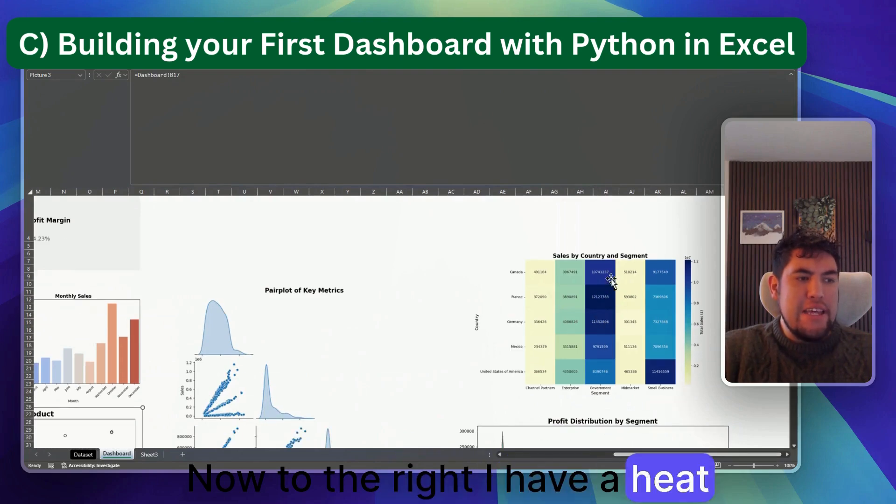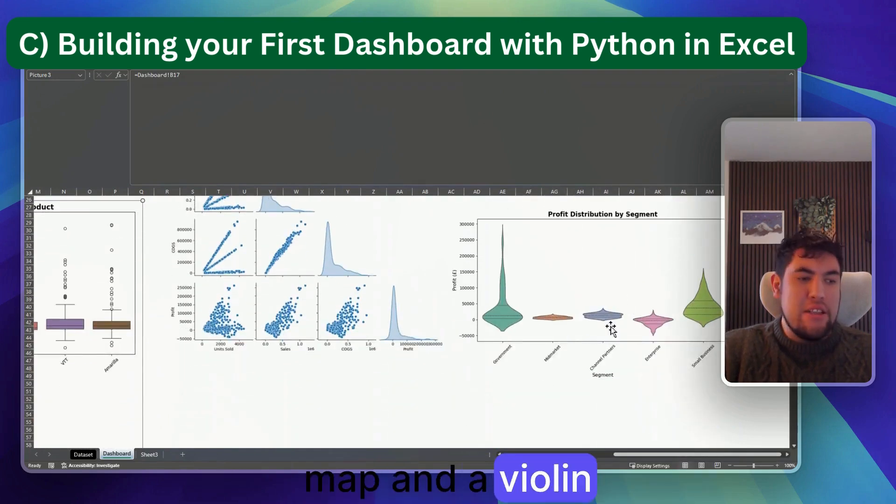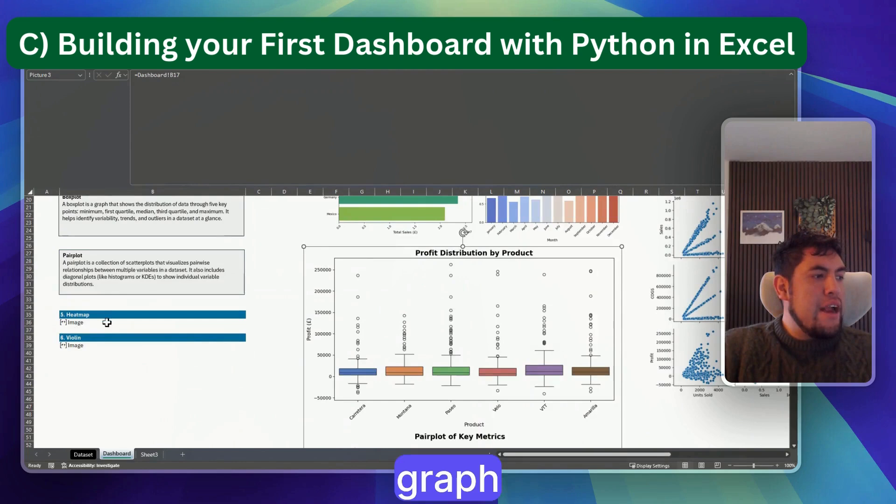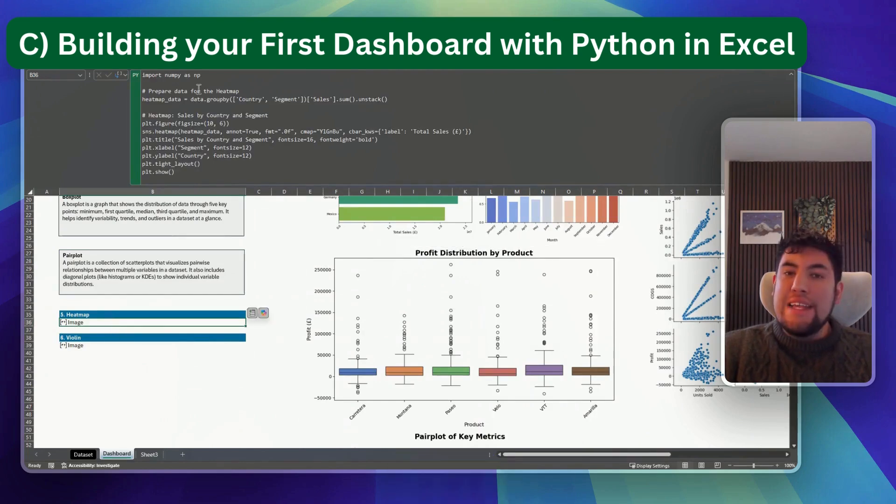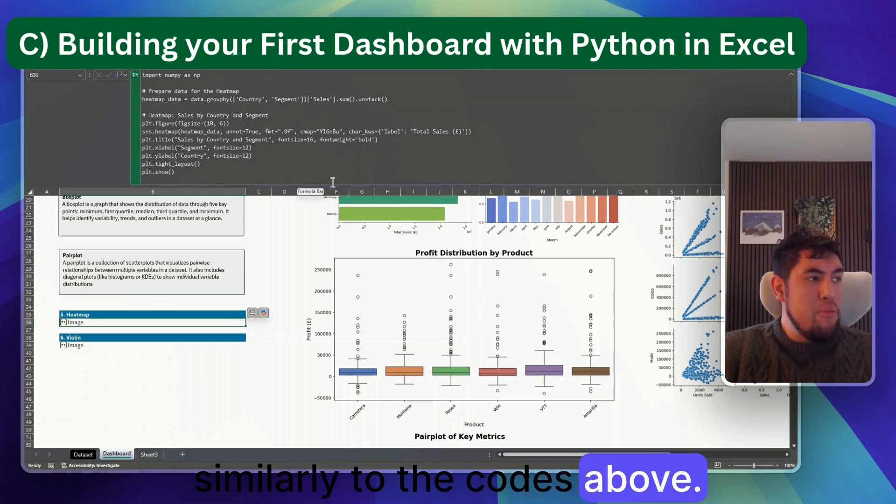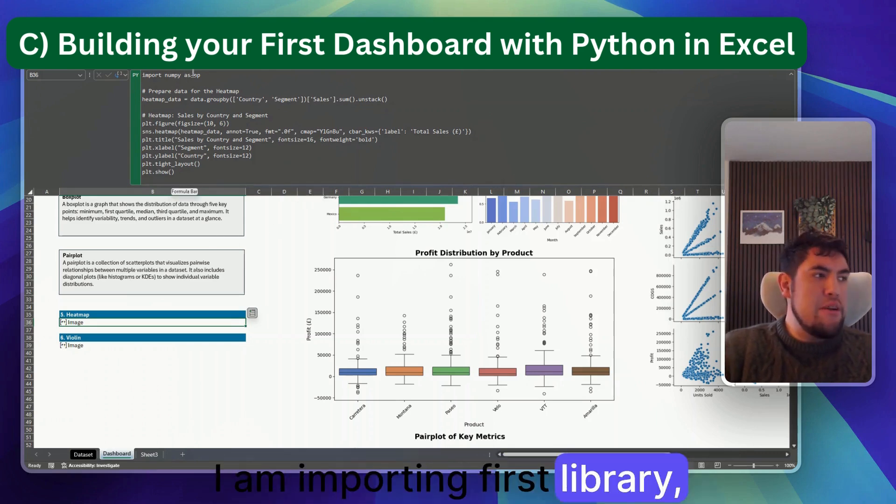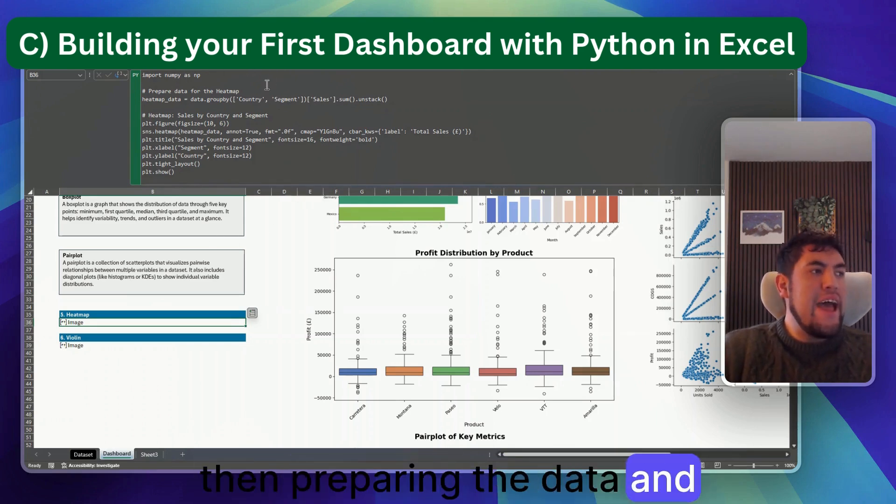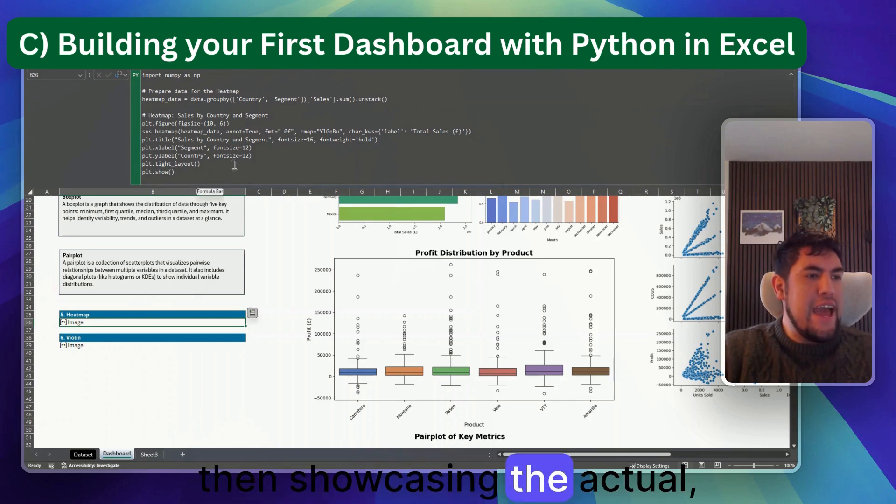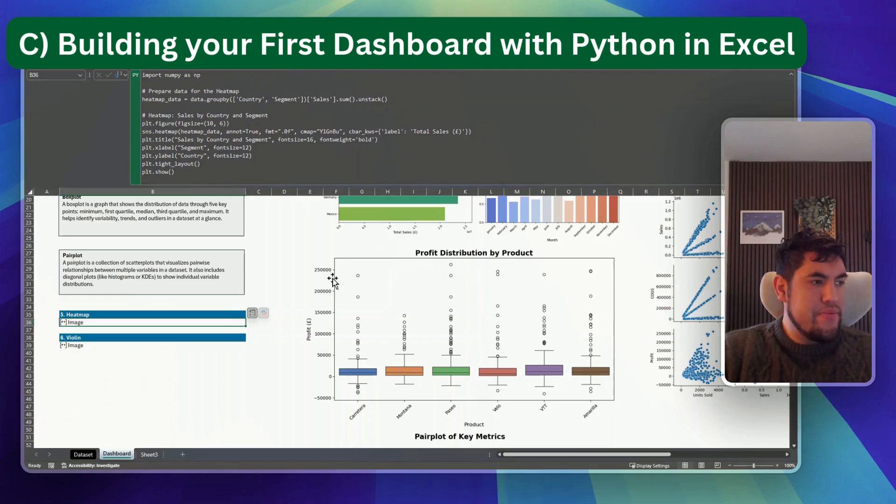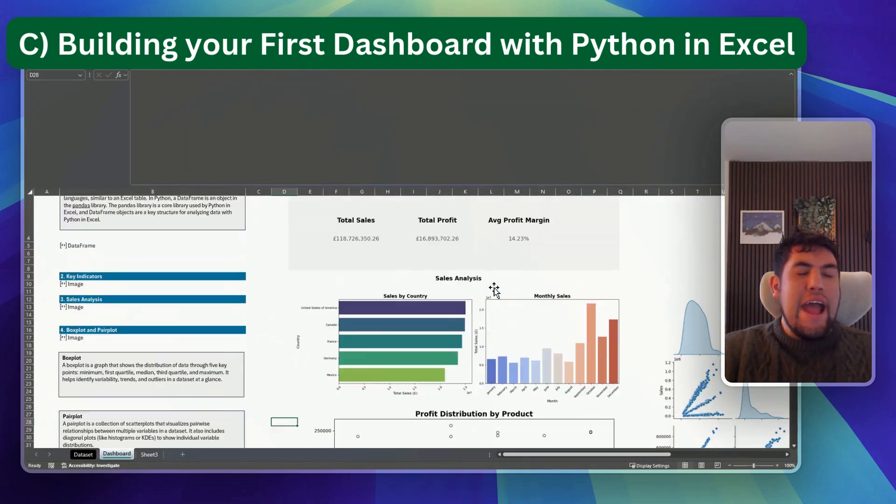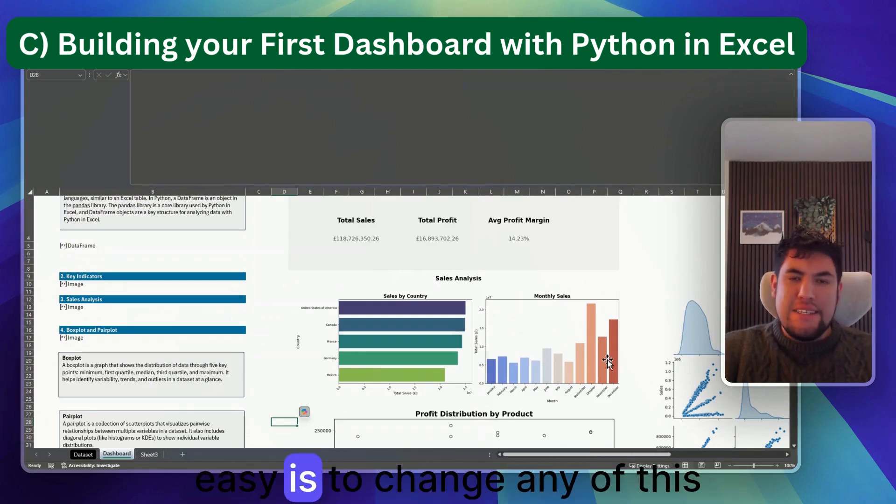To the right I have a heat map and a violin graph. Similarly to the codes above, I am importing first the library, then preparing the data, and then showcasing the actual graph.